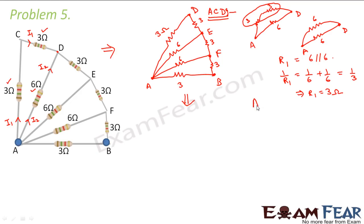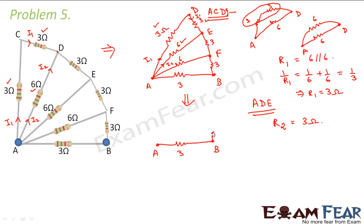Now we concentrate on the next part, ADE. If current I1 flows through one arm and I2 through the other, the same I1 flows through the paired resistor. So here also the 3 ohm and 3 ohm are in series, and their series combination is in parallel with 6 ohms — exactly similar to triangle ACD. Therefore the equivalent resistance R2 of ADE also equals 3 ohms, and we replace ADE with a single 3 ohm resistance.